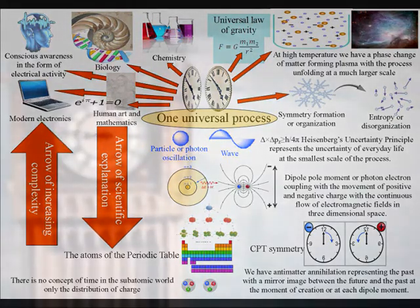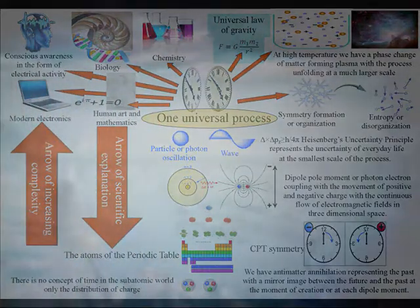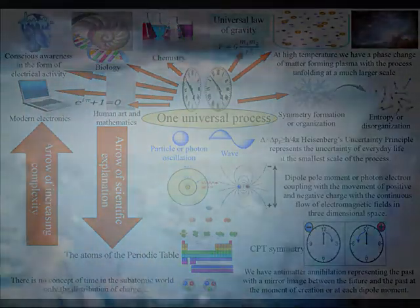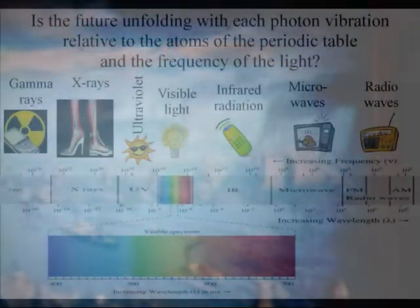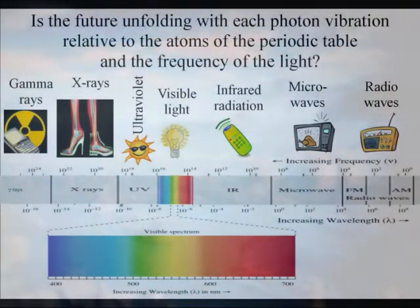In this theory, creation is based on one universal interactive process of energy exchange. We have an interactive process between the light of the electromagnetic spectrum and the atoms of the periodic table.